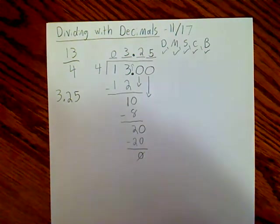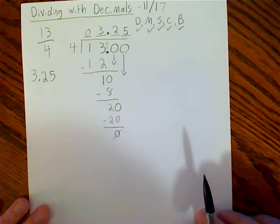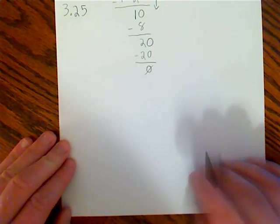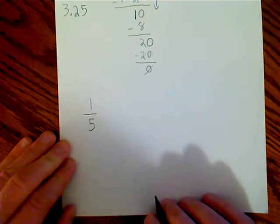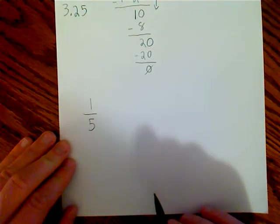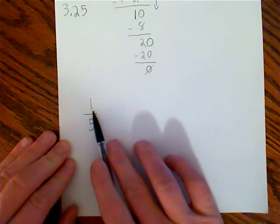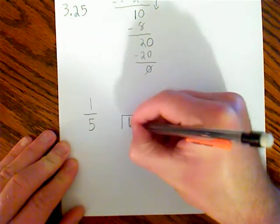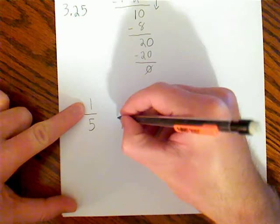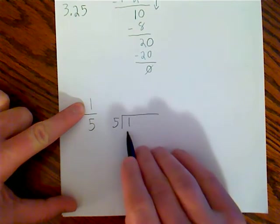Cool, let's do one more. I'm gonna do 1 over 5. Now this looks like a fraction. It is a fraction, but it's the same idea where that top number, the numerator, always goes inside the box.